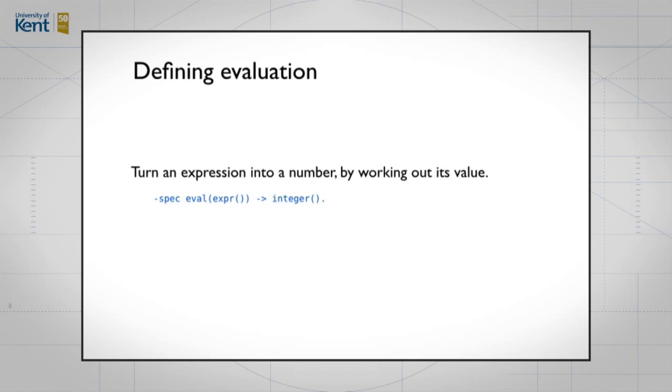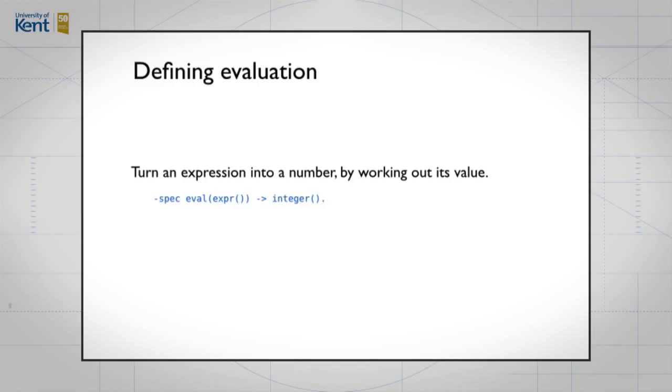What we're doing in an evaluation is turning an expression into a number. We can write a spec for that function eval. It takes an expression and gives us back an integer. We can be guided by the type we wrote earlier for expressions and build the template for evaluation. We have a case for a number, case for an addition, case for a multiplication.